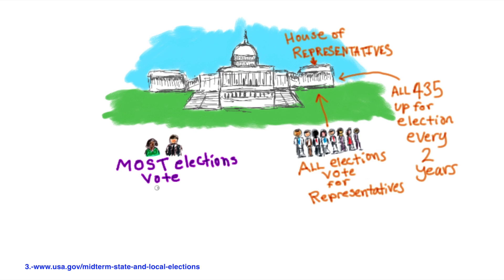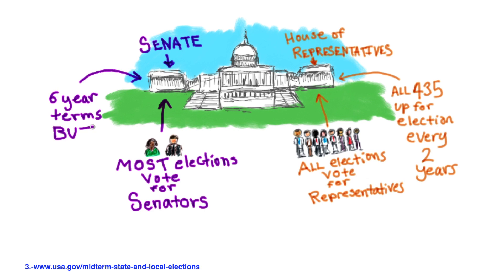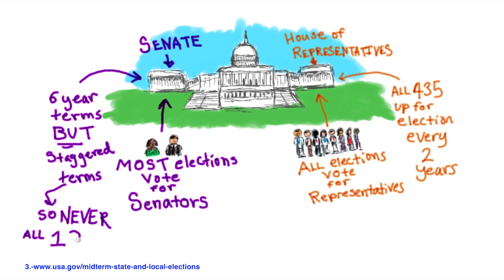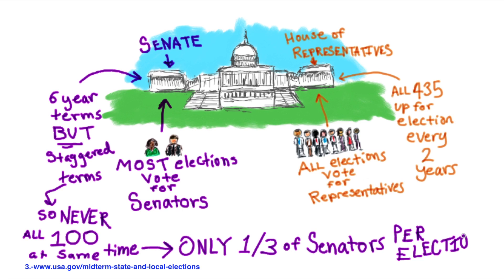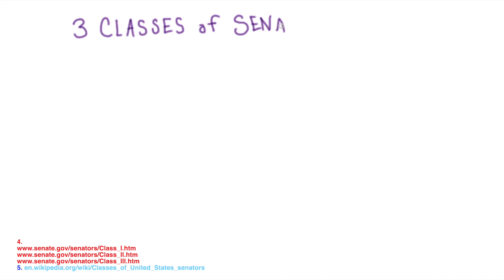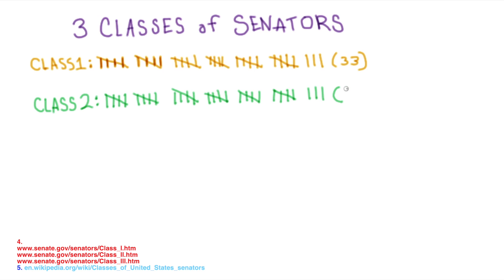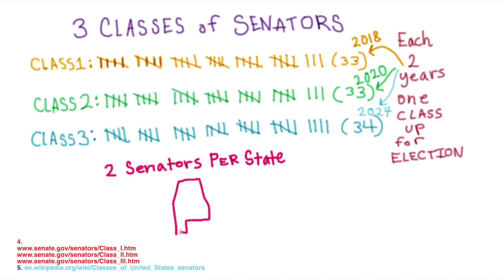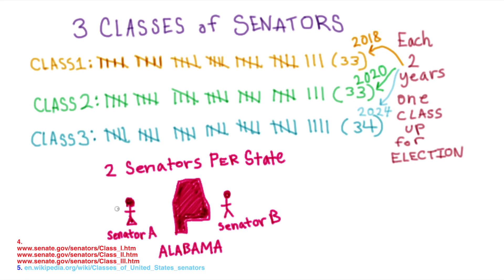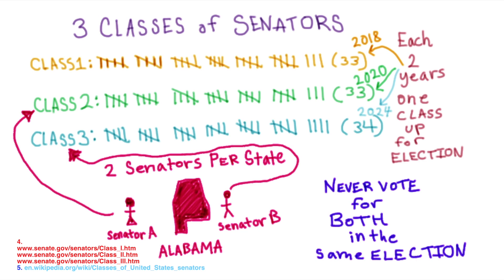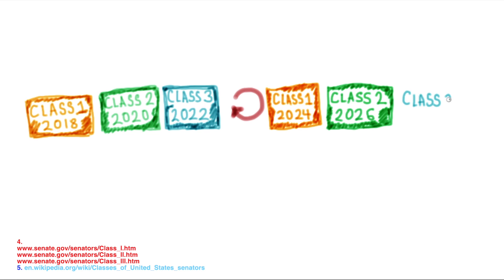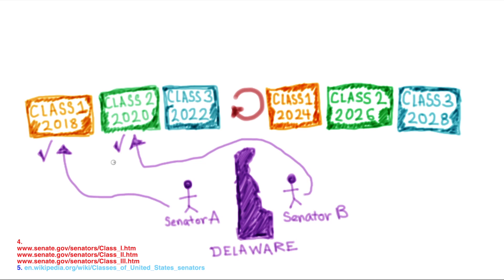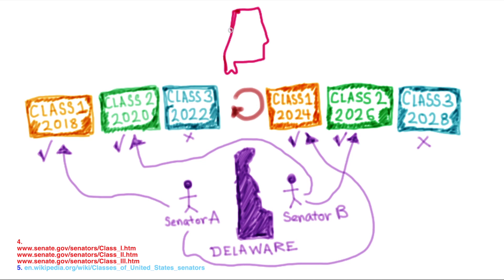In most federal elections, you will vote for senators. This is a bit complicated, so bear with me. Senators serve for six-year terms, but their terms are staggered, so you will never be voting for all 100 senators in one election. In each federal election, around one-third of the 100 senators are up for election. The senators are split into three classes: Classes 1 and 2 have 33 senators, and Class 3 has 34. Each two years, one of the classes will be up for election. Each state gets two senators, and the senators for each state are always in different classes, so you will never be voting for two senators at the same time. The way it works out is that a state will have at least two elections in a row when they vote for a senator, and then a third election when they won't, and then the cycle starts over again.